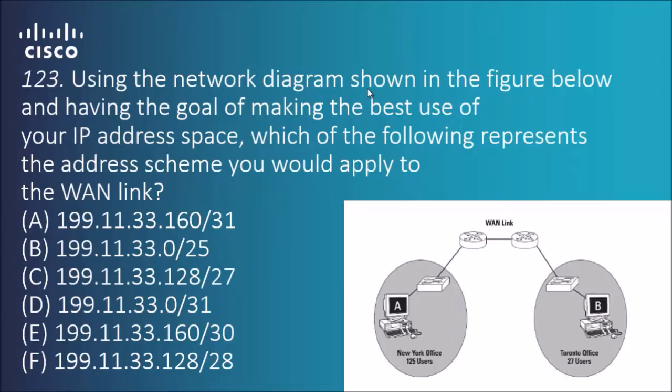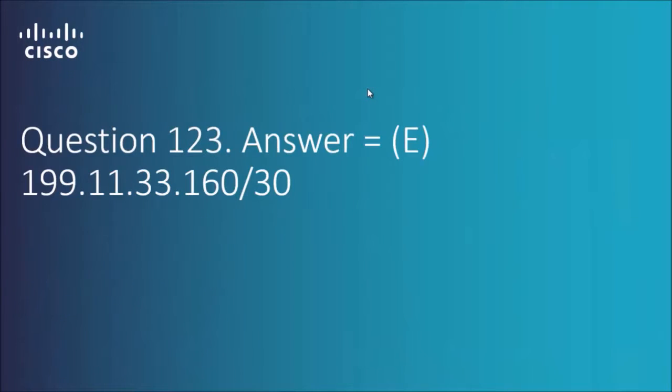Since we only need two valid IP addresses for the WAN link, we can do 199.11.33.160 subnet 30. That would be four addresses, take away the two network and broadcast addresses, gives us two valid addresses, and that's all it needs to work.